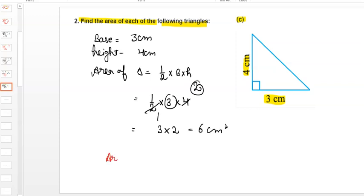So the final answer is area of triangle is equals to 6 cm square. This is your answer. I hope it will be clear to you.